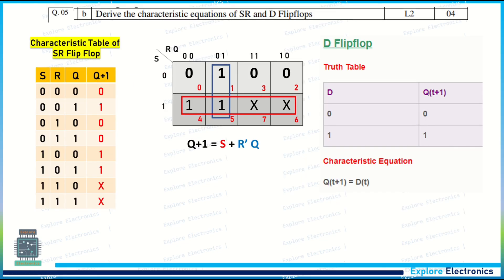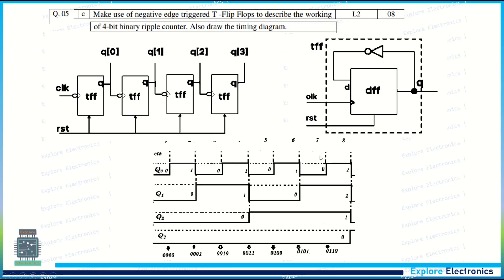Derive the characteristic equation for SR and D flip-flops. This is the SR flip-flop characteristic table with columns S, R, Q, and Q-next (next state). Using K-map we can write the expression. Similarly, we can derive the characteristic equation for the D flip-flop.